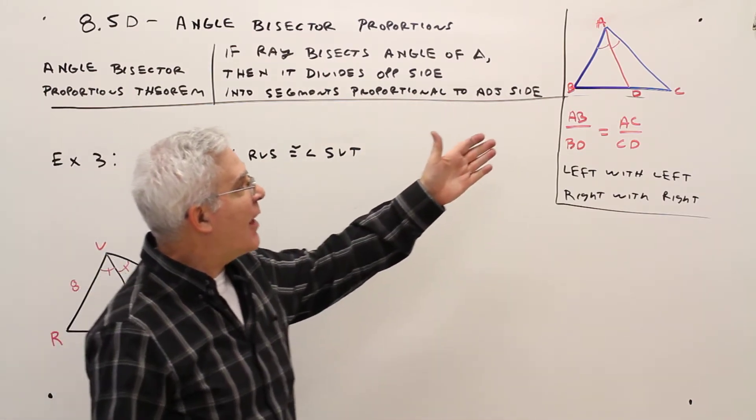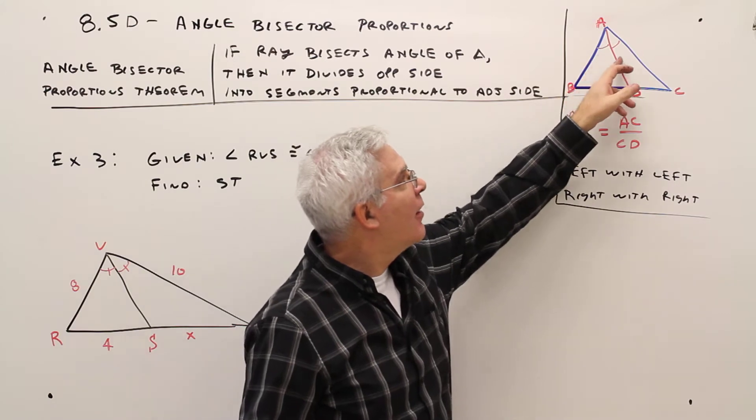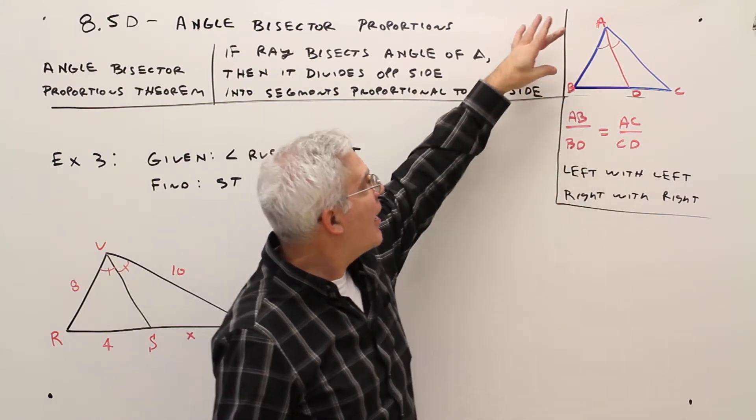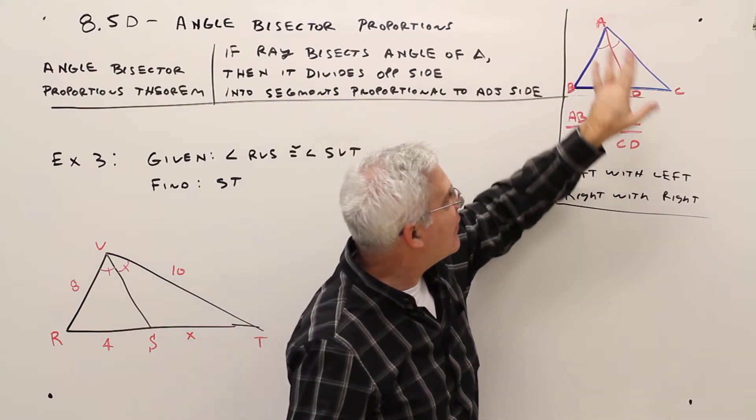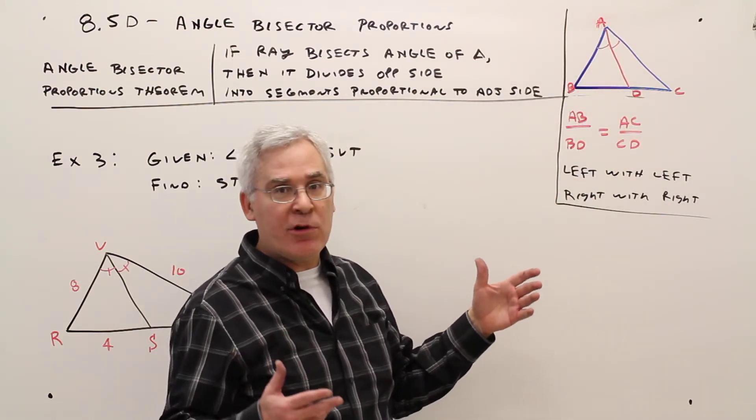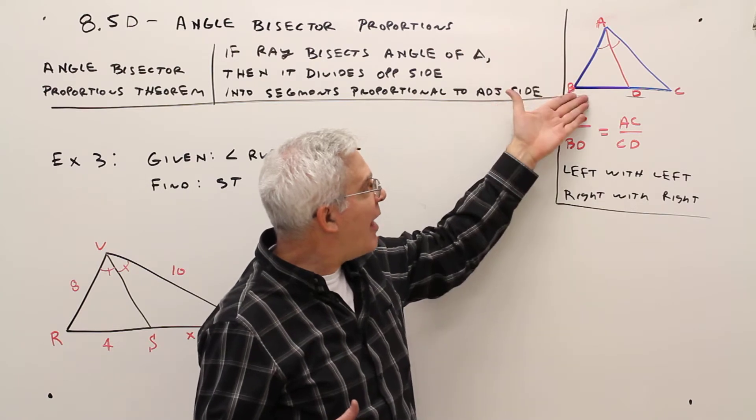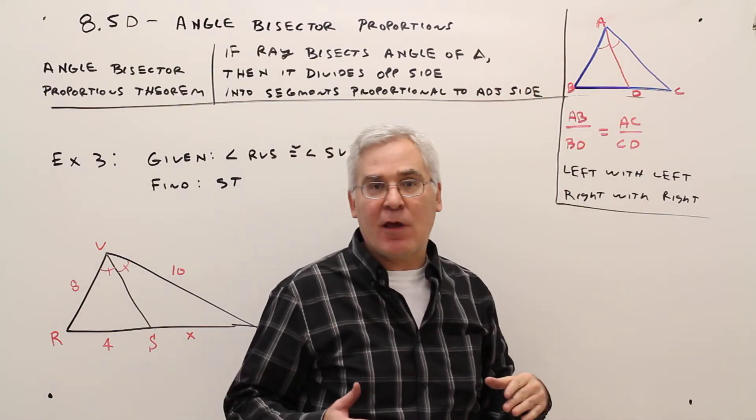So here's an example. I've got this triangle here. I've got an angle bisector. AB over BD equals AC over CD. And just as a memory device, left side with left side, right side with right side.